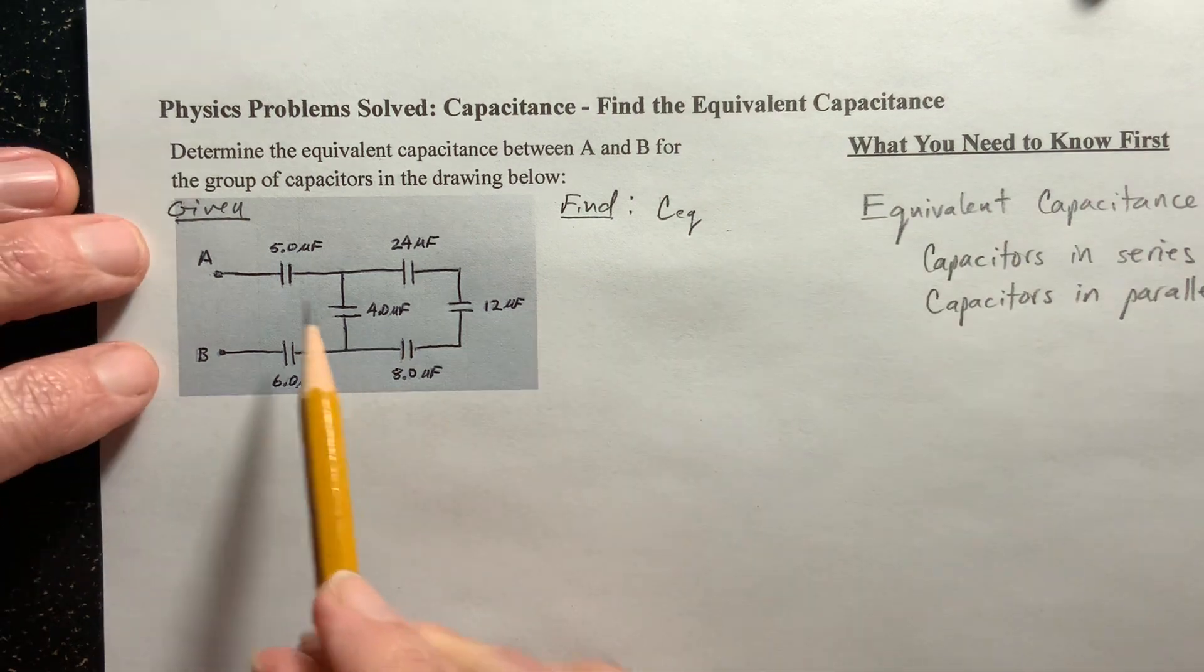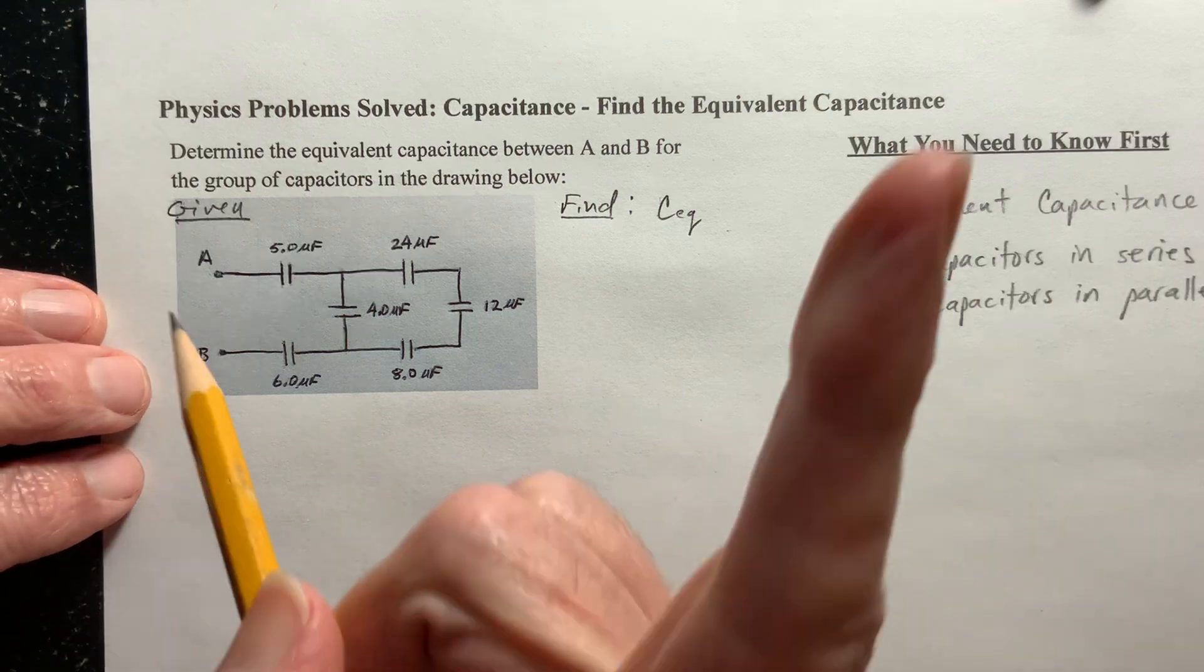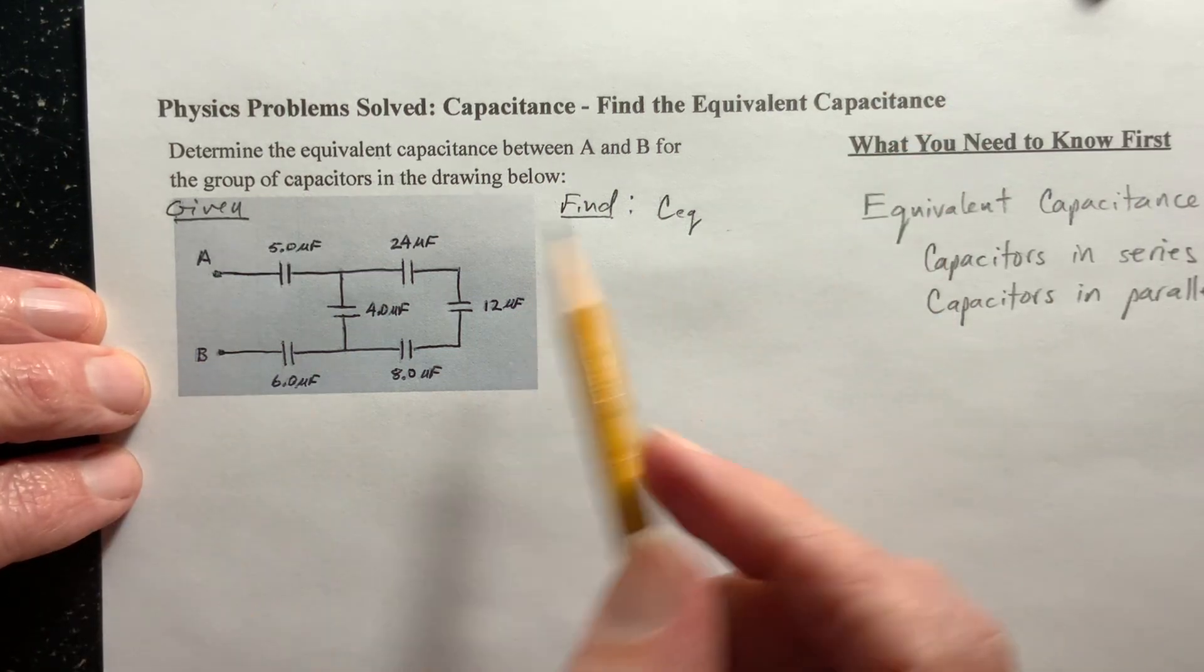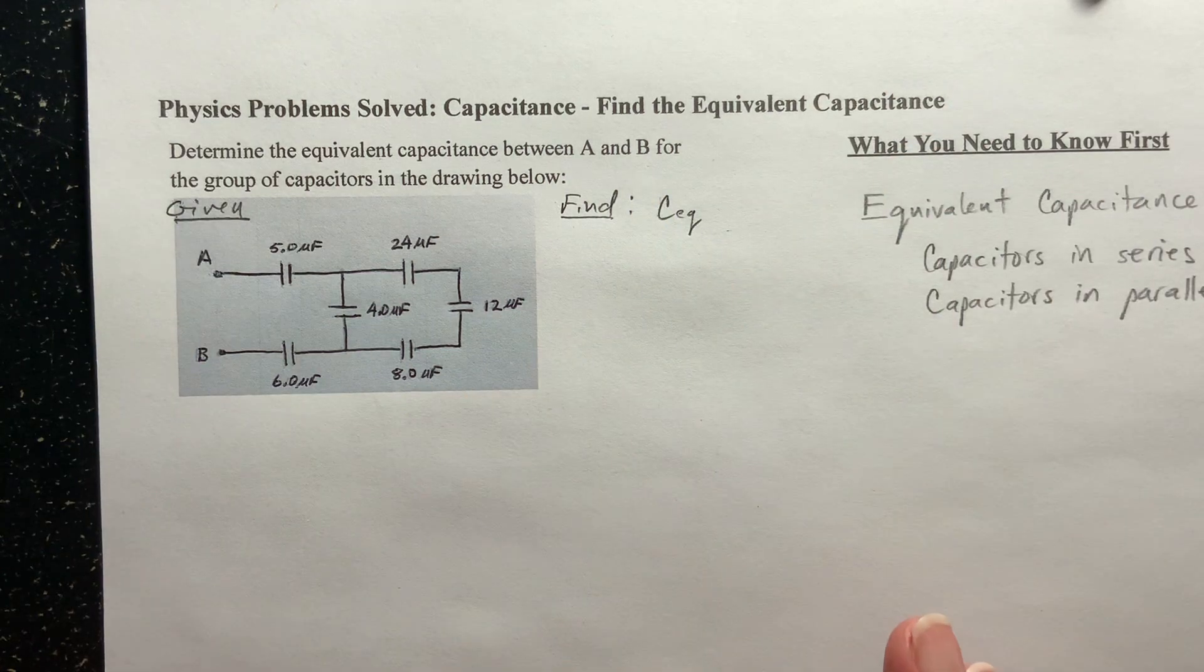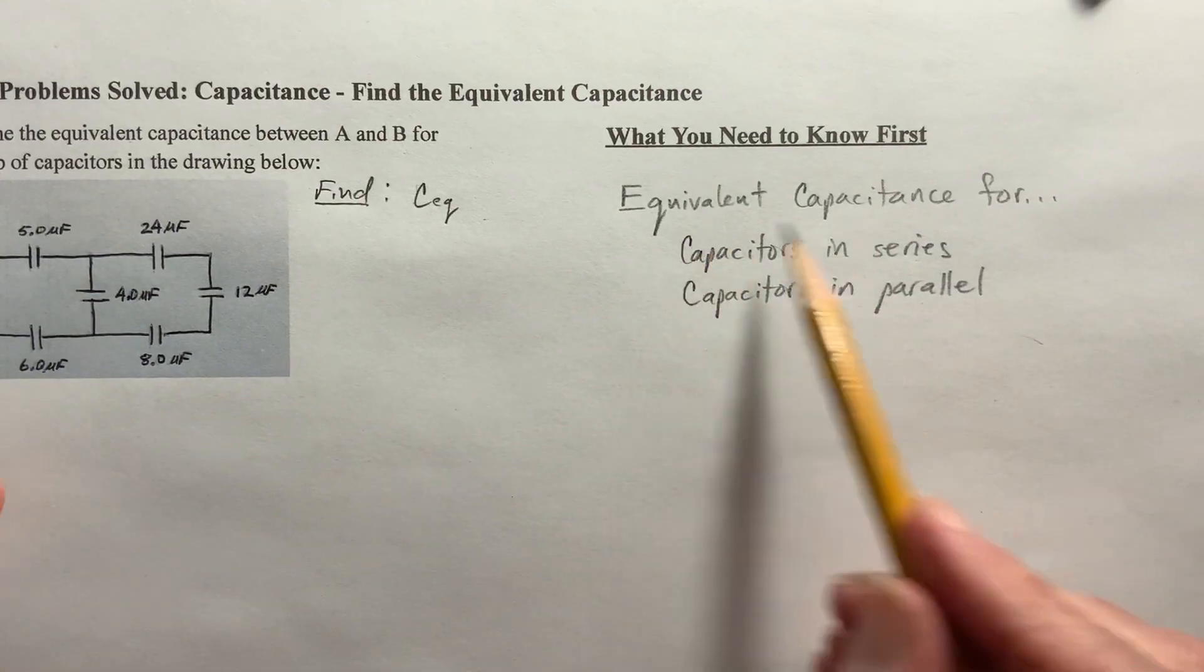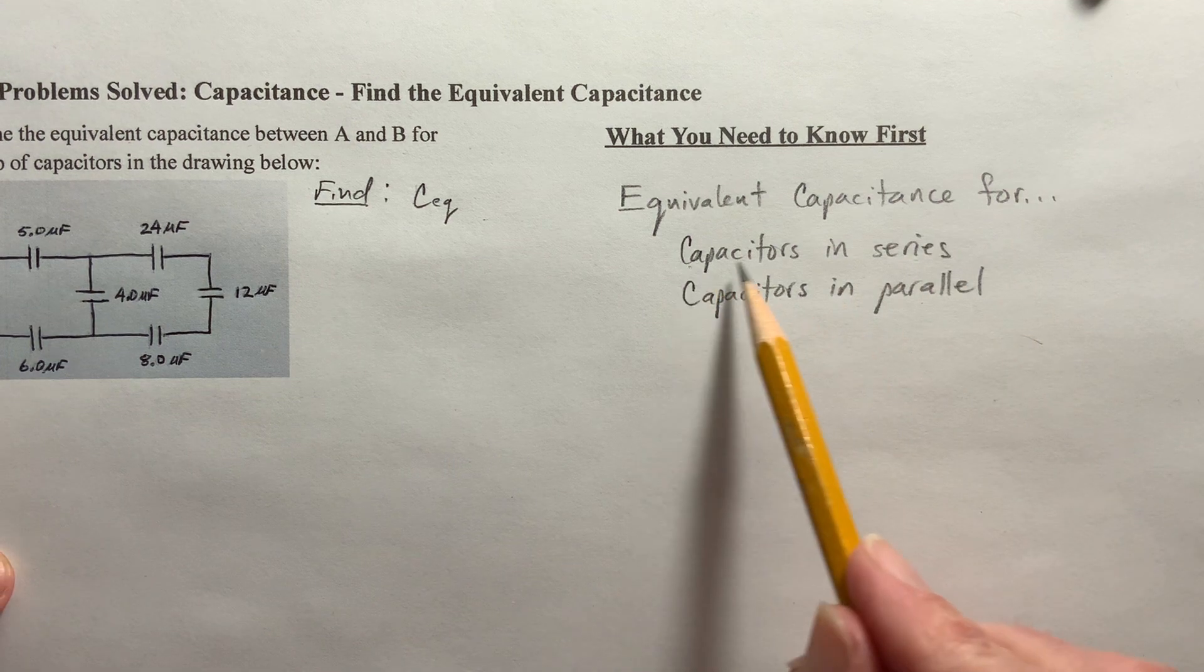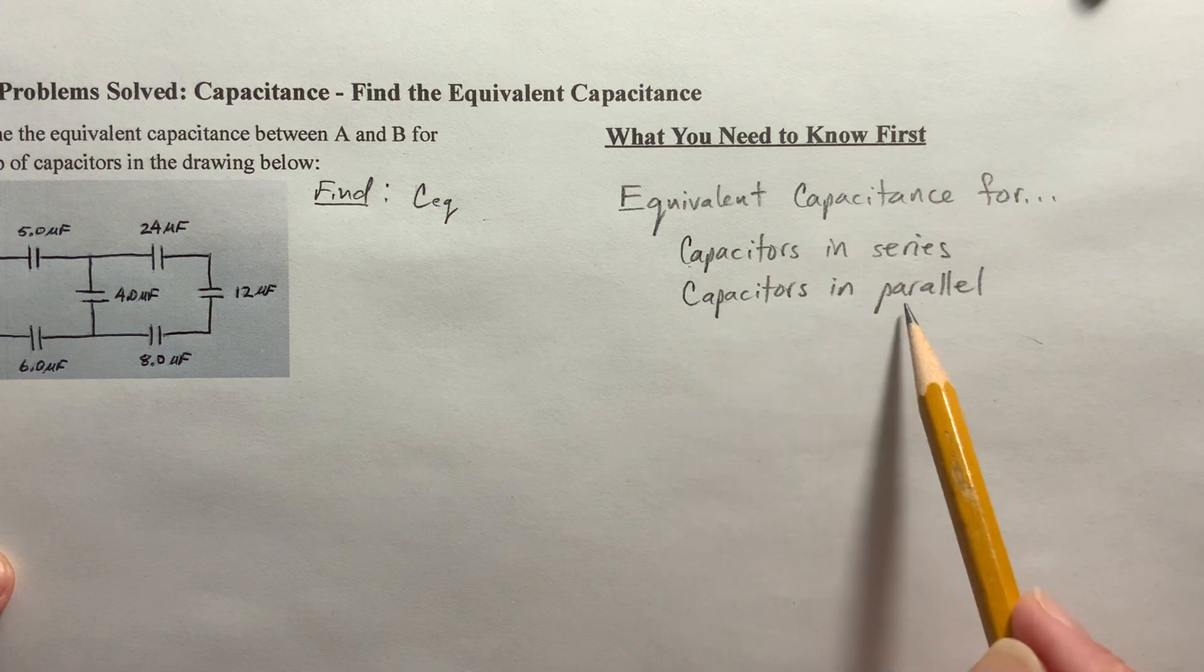So, in other words, I have a whole bunch of capacitors all arranged this way, and I want to know what one capacitor replaces these. Now, here's what you need to know. You need to know how to find equivalent capacitance, but specifically for capacitors in series and capacitors in parallel.